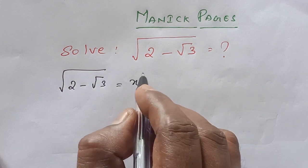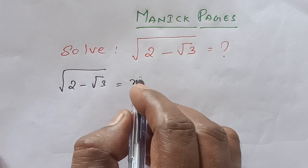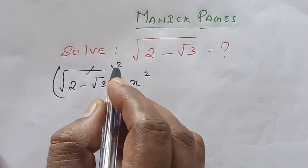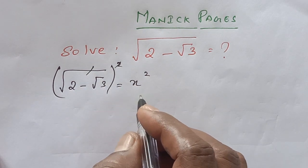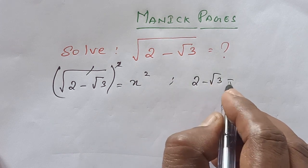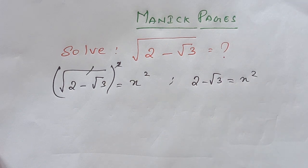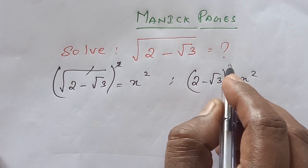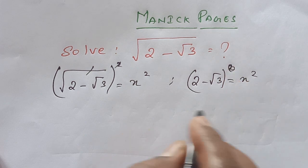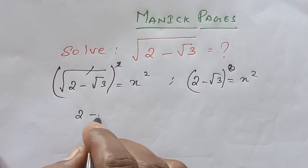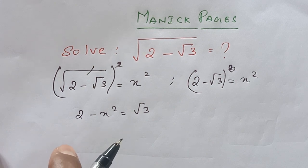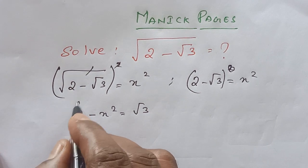Now I am squaring on both sides. If I square on both sides, the square root and square will cancel. That means 2 minus square root of 3 is equal to x squared. So I change this: 2 minus x squared is equal to square root of 3 — I just exchange the values. Now I square on both sides.